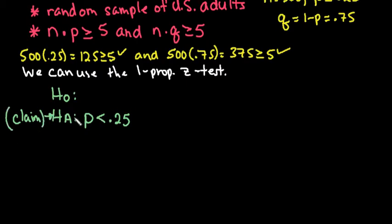If it's a statement of equality, then it goes in the null. I'm going to go ahead and establish that this is my claim. That way, when I go to interpret my decision, I know the correct word usage. We interpret it differently if the claim is about the null than we do if it's about the alternative. So the null is just the complement. Some texts will just put that p equals 0.25. Both of them are acceptable.